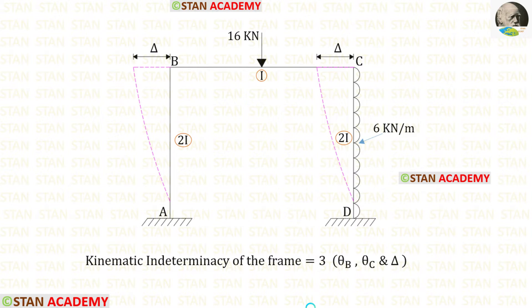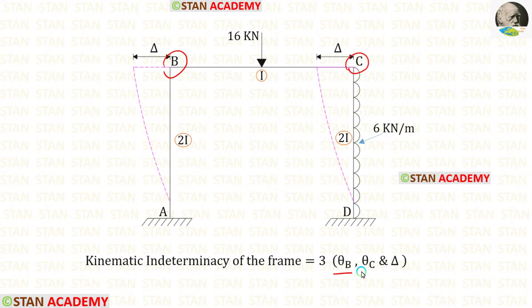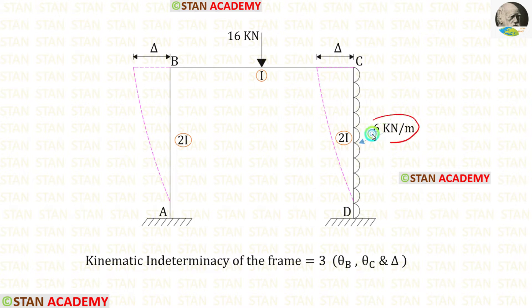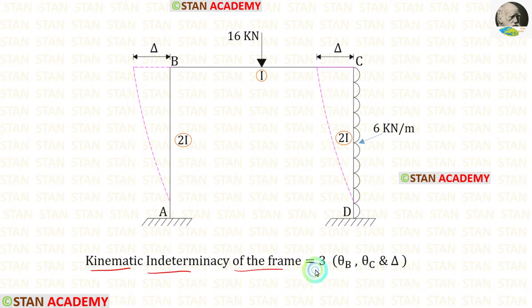Now let us find the kinematic indeterminacy of the frame. In joints B and C, there will be slope — theta B and theta C respectively. Additionally, there will be sway. We know that in this frame, the loading is not symmetrical, so there will be sway. Since this load acts towards the left side, the sway will also be acting towards the left side. So the kinematic indeterminacy of the frame is 3.